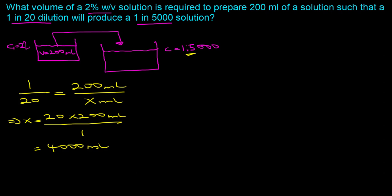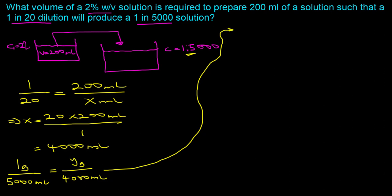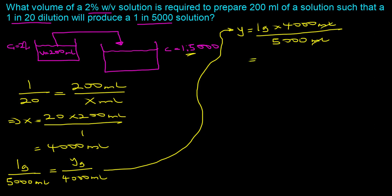The next step is to determine the actual amount of solute present in the 4000 milliliters given the concentration of 1 in 5000. A concentration of 1 in 5000 implies one gram of solute in 5000 milliliters of preparation. Setting up the proportion: 1 gram over 5000 milliliters equals y grams over 4000 milliliters. Solving for y: y equals 1 gram times 4000 milliliters divided by 5000 milliliters, which gives us 0.8 grams.